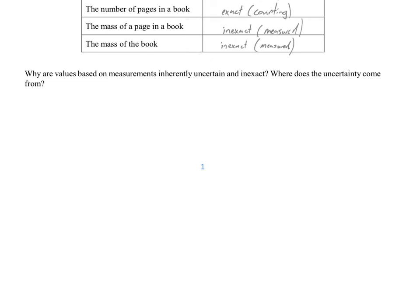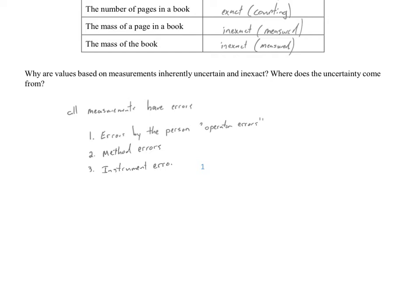Now, why are values based on measurements inherently uncertain? All measurements involve some form of error. When thinking about errors, it's helpful to organize them into categories: errors introduced by the person taking the measurement, errors from the method under which the measurement is taken, and errors introduced by the instrument itself — the thing you're actually using to take the measurement.